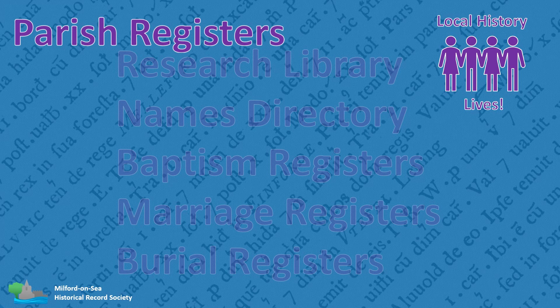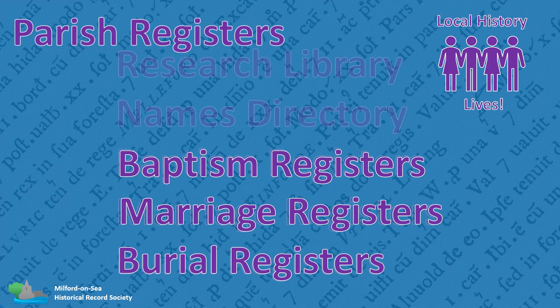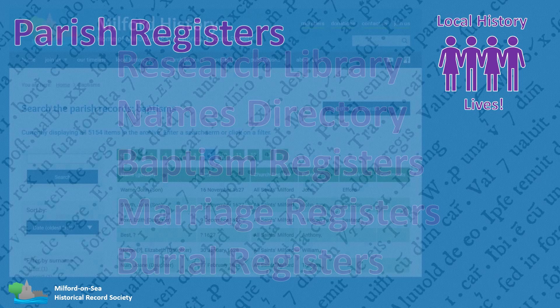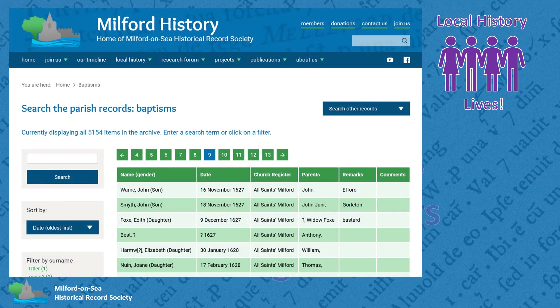Our parish registers are split into three separate search aids, which take the researcher up to the start of civil registration in 1837. Online access is available to Milford's baptisms, marriages, and burials, with nearly 20,000 records stretching from 1594 to 1837, all at your fingertips. As with the Names Directory, you won't see the original record, but you will be told the date and the register where the entry can be found. If you wish to see the original or a copy, they are held at local libraries and the Hampshire Record Office.